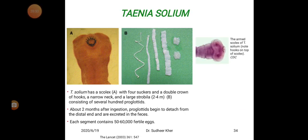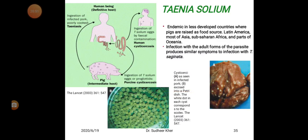About two months after ingestion, proglotids begin to detach from the distal end and are excreted in the feces, each segment containing 50 to 60,000 fertile eggs. Taenia solium is endemic in less developed countries where pigs are raised as a food source — Latin America, most of Asia, Sub-Saharan Africa, and parts of Oceania.